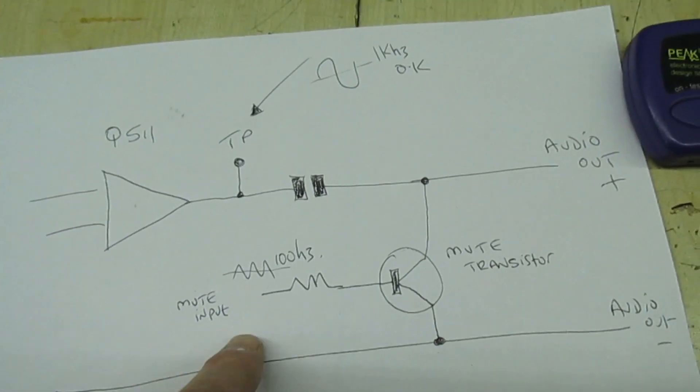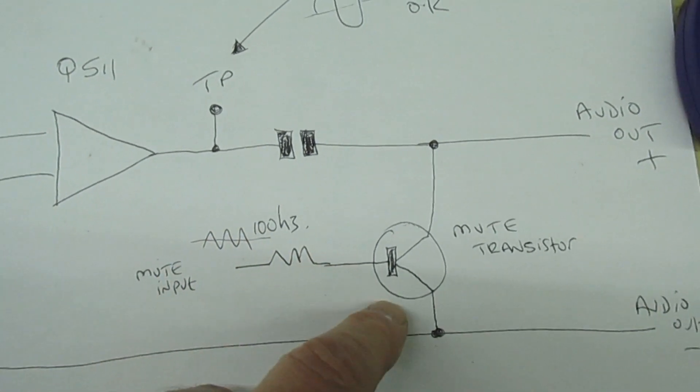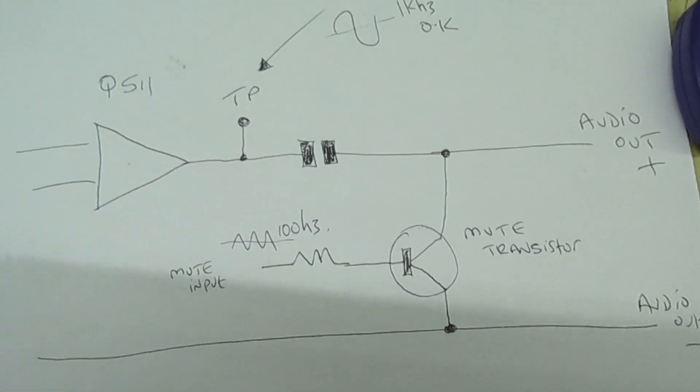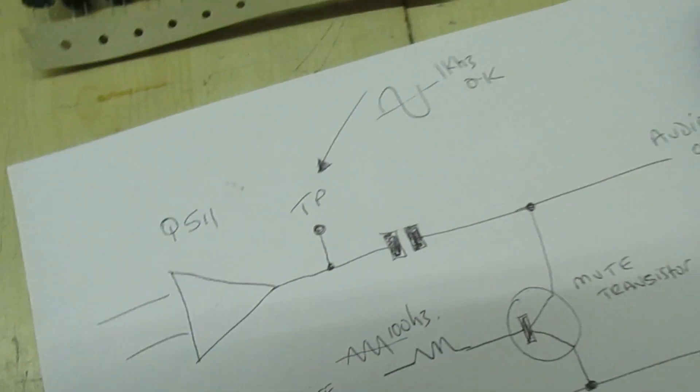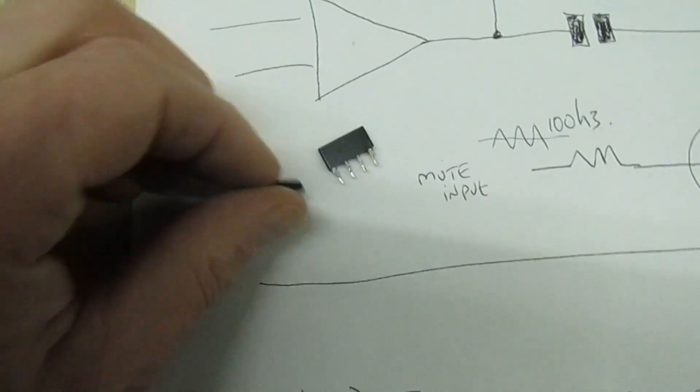So it actually turns out that the 100 hertz ripple signal is actually modulating the audio output via that transistor. Now I've changed both bridge rectifiers because I've had trouble with rectifiers in the past, but that didn't cure the fault.